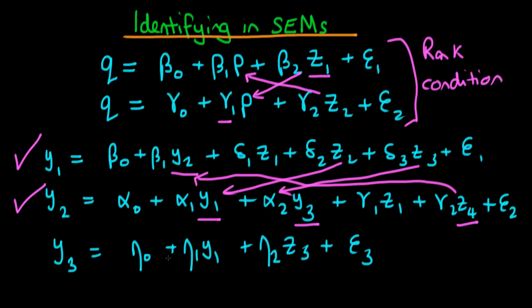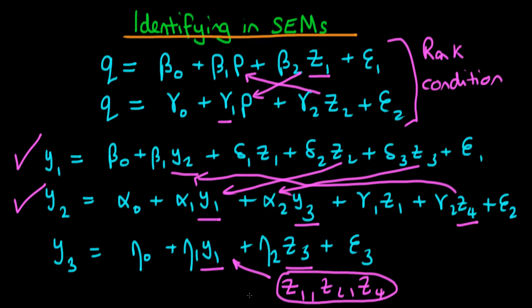Finally, the last equation has only one endogenous explanatory variable y1 and one exogenous variable z3. We can fully identify equation three as well, because we can use z1, z2, and z4 as instruments for y1. In fact, because we have more instruments than endogenous variables, this last equation is over-identified. This means we can test for over-identifying restrictions — as discussed in IV analysis — to check whether our exogenous variables are truly exogenous. Each of these equations is identified, so we can estimate all parameters in each equation.